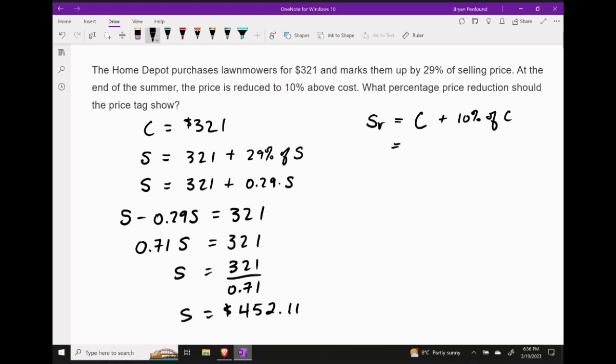In other words, let's take $321 and add to it 10% of itself. This means that the reduced selling price is $353.10.